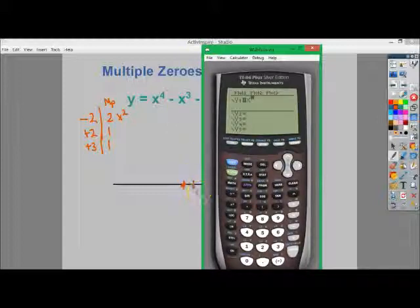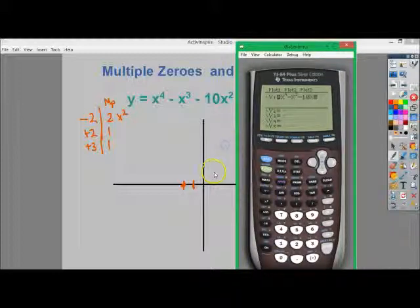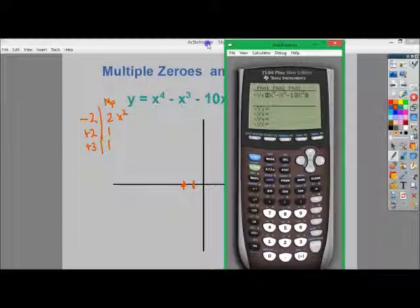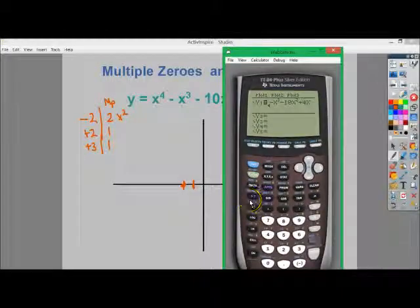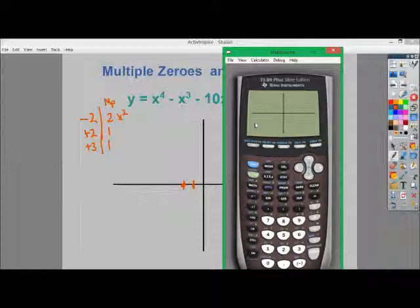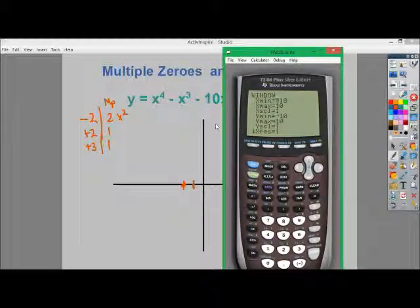x to the 4th minus x to the 3rd minus 10x squared plus 4x plus 24, I think, yeah. And because it has a positive first coefficient and it's even, it should have this kind of going down feel to it. Let me change the window. I think that might make a big difference here.